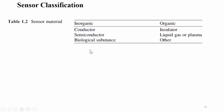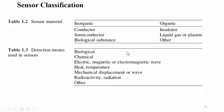Depending on the material used in the sensor, classification is again made into inorganic and organic. Inorganic sensors use conductor, semiconductor, and biological substance-based materials. Organic material-based sensors use insulator, liquid, gas, or plasma-based materials, as well as other advanced materials.